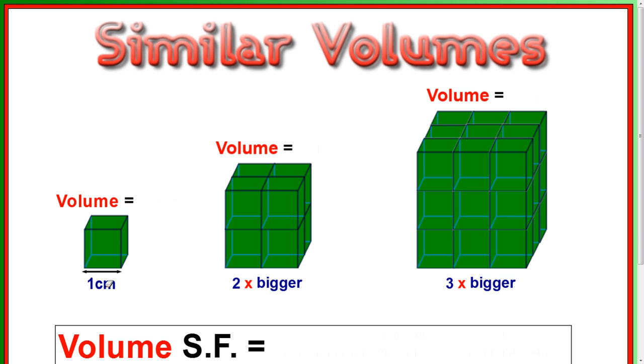So, the volume of this cube is one times one times one, so that's just one centimetre cubed. The volume of this one, however, is one, two, three, four, five, six, seven, eight centimetres cubed. So, when we doubled the linear scale factor, or doubled just the normal scale factor, the volume seemed to multiply by eight.